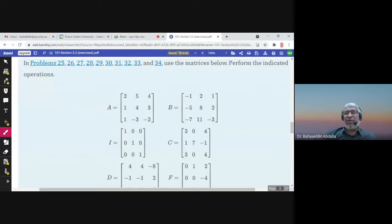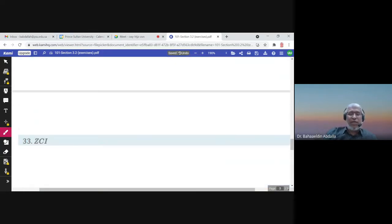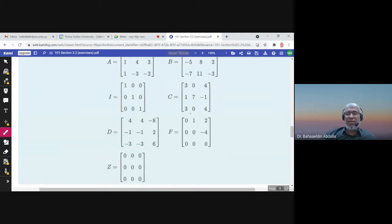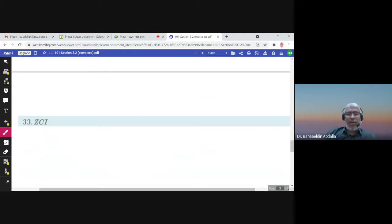Use the matrices below. Perform the indicated operations. Z times C times I. Well, Z is the zero matrix, C is this matrix, and I is the identity matrix. I can find this by first multiplying Z times C, and then the answer by I, or Z times CI first, and then multiply by C.